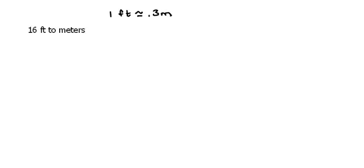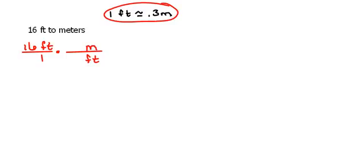So let's do this first. We're starting out with 16 feet over 1. We do not want feet, so we're going to have to get rid of that. Now we have this conversion factor here that says we can change feet into meters because one foot is approximately 0.3 meters.